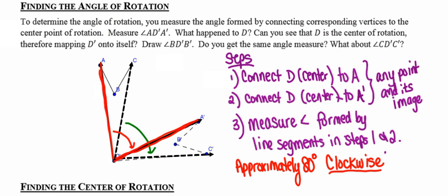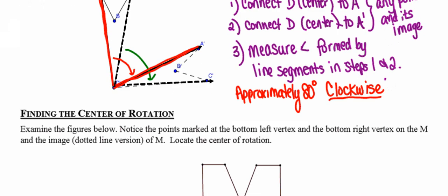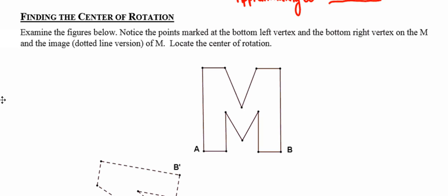So that's the first objective that you need to be able to accomplish from this video. You need to be able to find the angle of rotation. The second objective that you need to be able to accomplish is to be able to find the center of rotation. And I'm going to be a little bit more specific here using a construction.